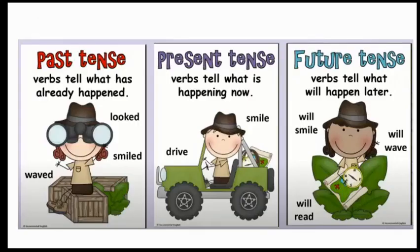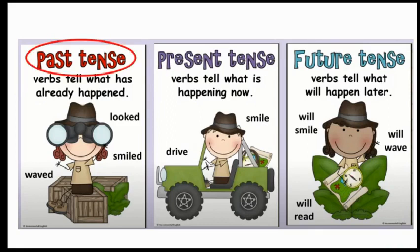Verbs can also tell us when the action happened. There are three tenses: past tense, present tense, and future tense. Past tense verbs tell what has already happened and they usually end with -ed. We add the -ed inflectional ending, so we get words like looked, smiled, and waved.